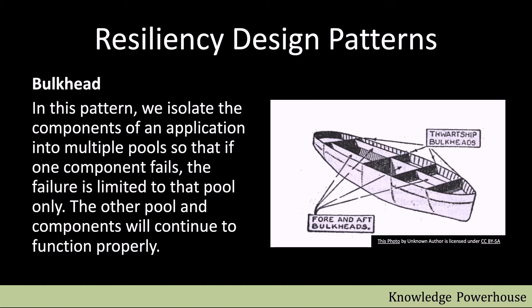In this pattern we isolate components of an application into multiple pools so that if one component fails, the failure is limited to that pool only and other components continue to function properly. For example, on Amazon's website there are various components — one shows products you like, one shows what you searched for, one shows what you might be interested in. If there is a failure in one of those components, the rest of the web page keeps working, so the customer can still proceed.